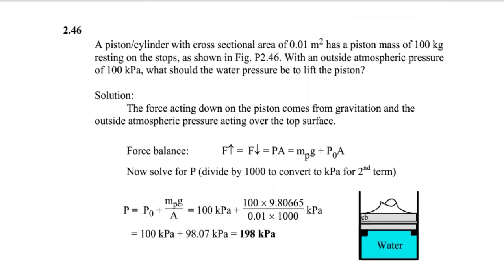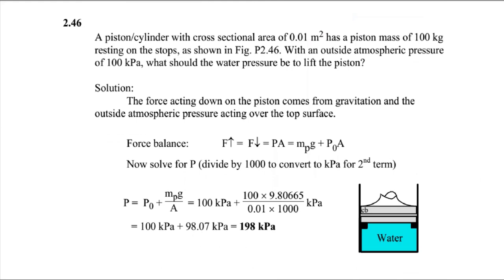Moving forward to another question: a piston and cylinder with a cross-section area of 0.1 square meters, a piston mass of 100 kg resting on a stop, and outside atmospheric pressure of 100 kPa. What water pressure is needed to lift the piston?